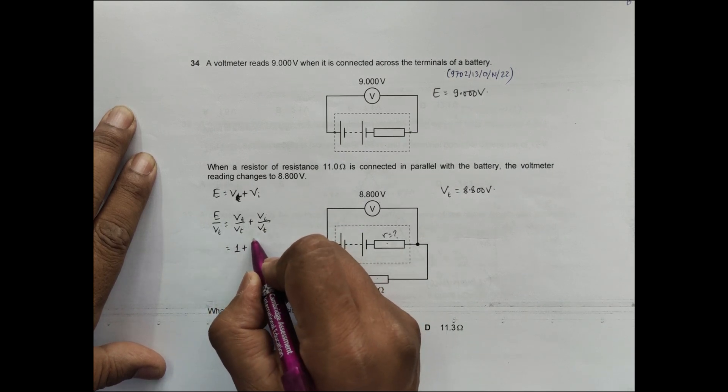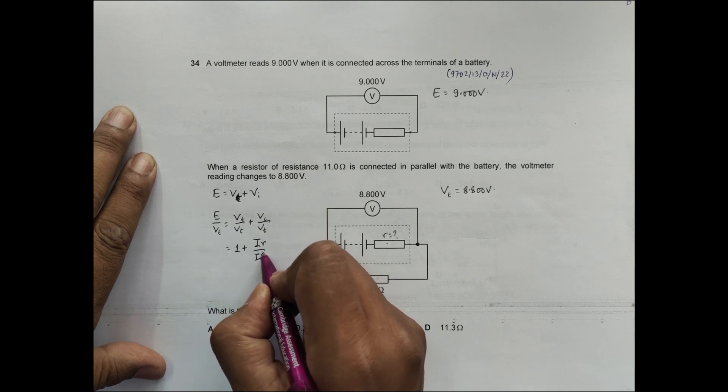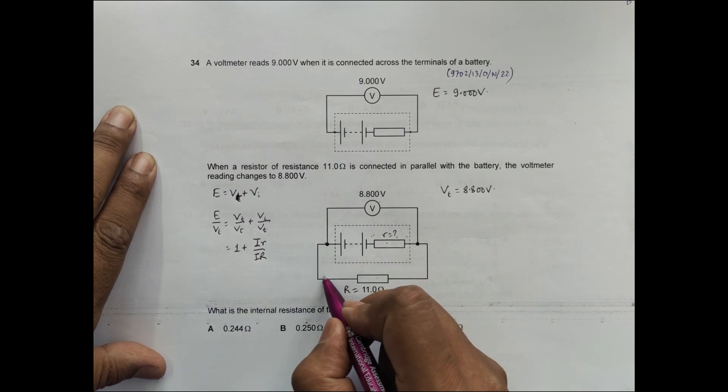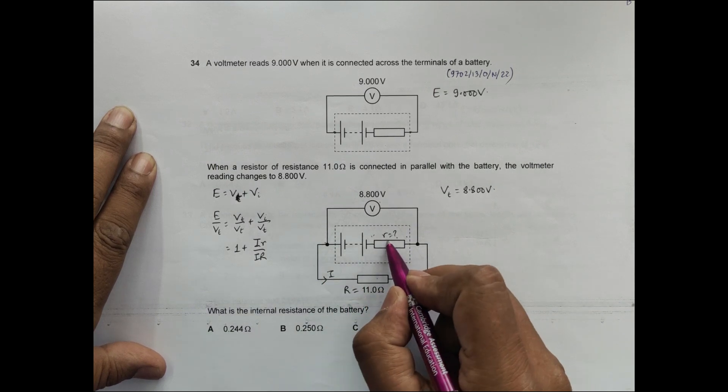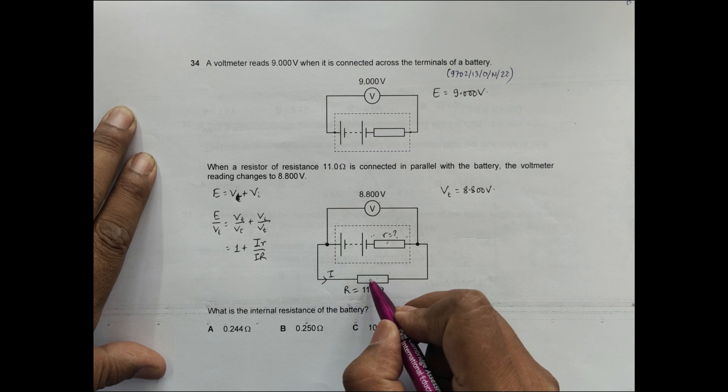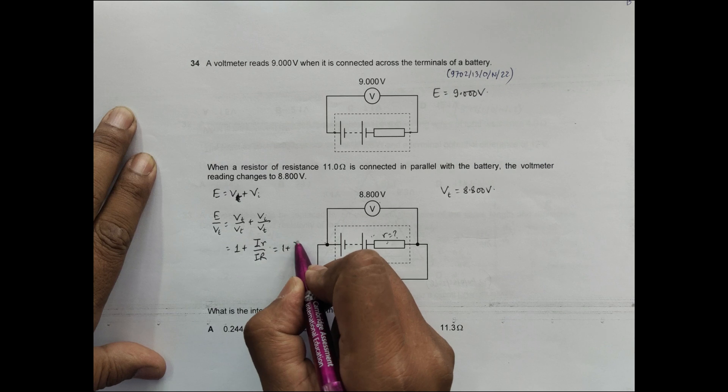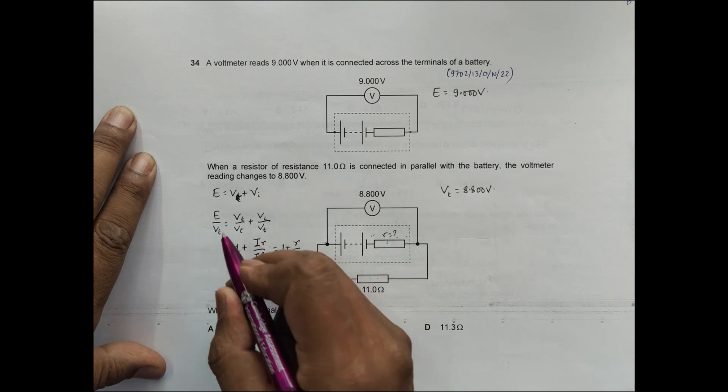This equals current into this and current into this. The PD here will be I into small resistance and the PD here will be I into the large resistance. This equals 1 plus small r by R.